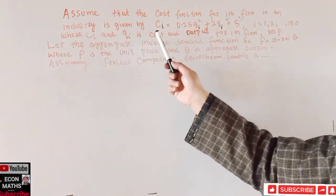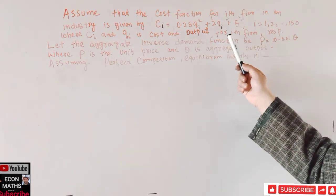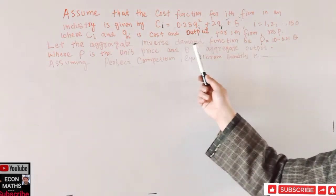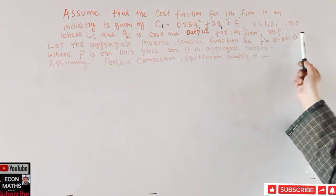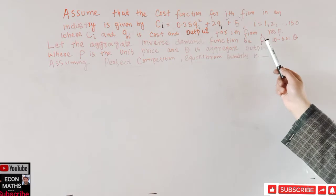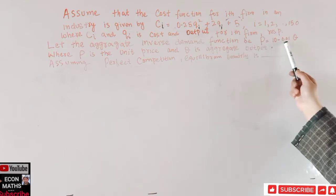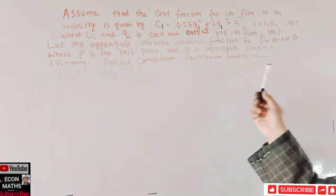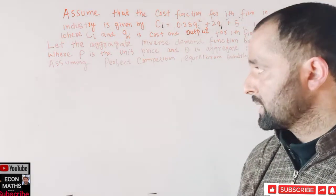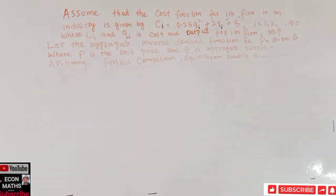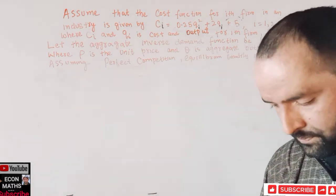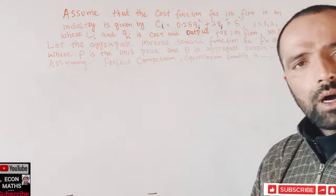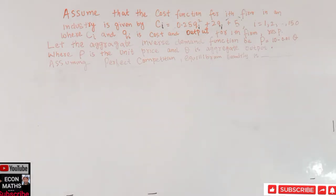Here, C_i and q_i are the cost and output for the ith firm respectively. The aggregate inverse demand function is given as P = 10 − 0.01Q, where P is the unit price and Q is the aggregate output. Assuming perfect competition, we need to find the equilibrium quantity in this market.